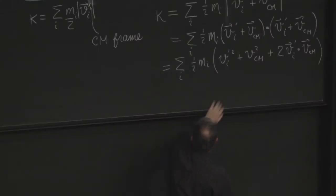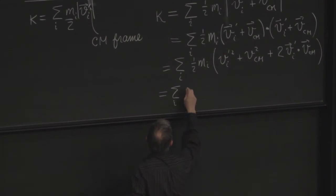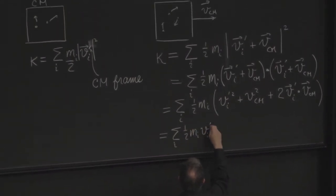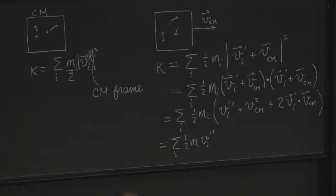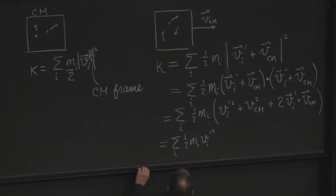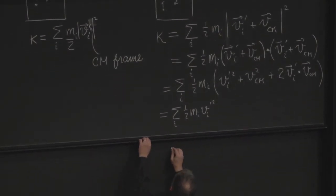So the first one looks like sum on i of 1 half m sub i v sub i prime squared, which is a fancy way of just writing the kinetic energy in the center of mass frame. It's not even fancy, it is just the center of mass kinetic energy. So this part is the kinetic energy in the center of mass frame.